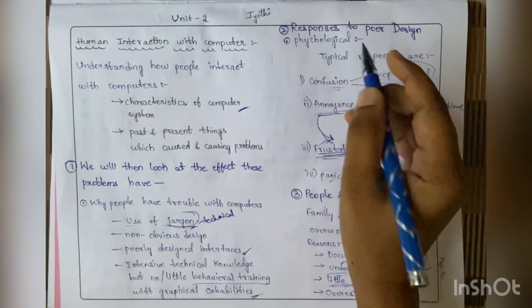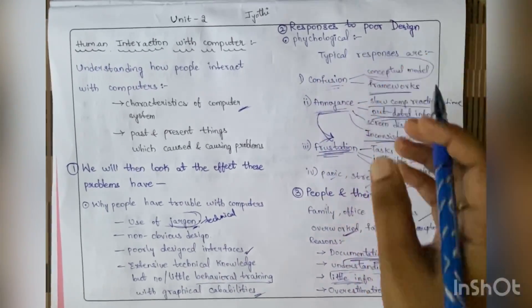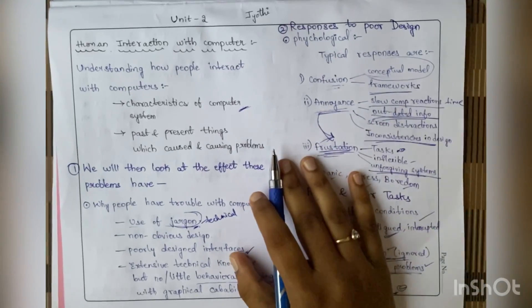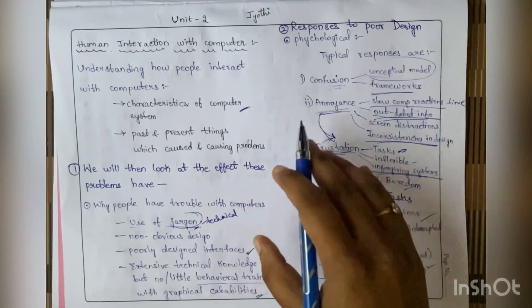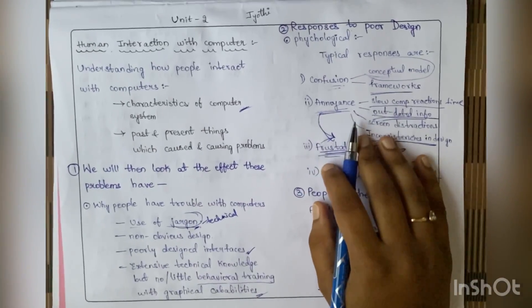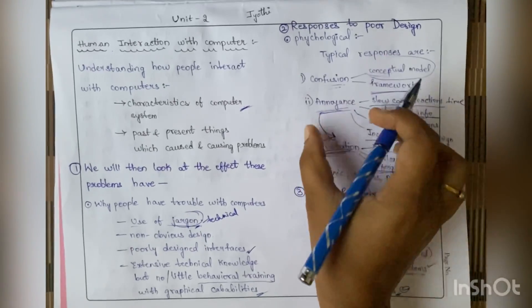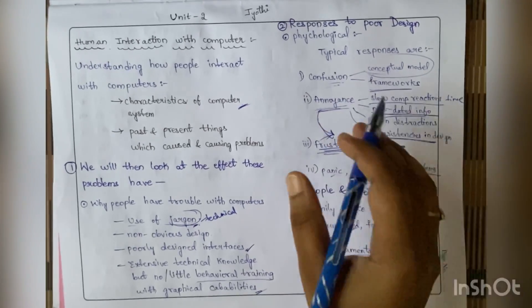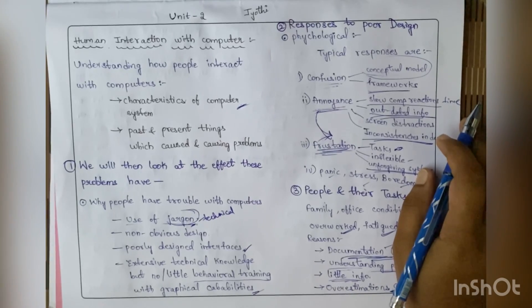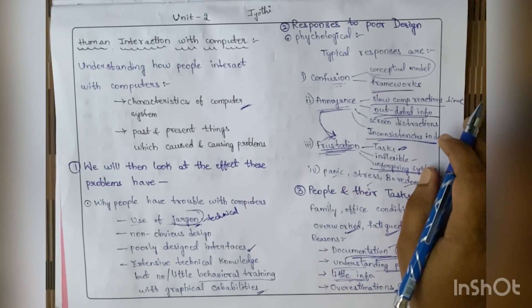The second subtopic is responses to poor design. Because of poor design, what are the responses from people? There are typical responses given by them - they said they are confused, they are annoyed, they are frustrated, and many other things.